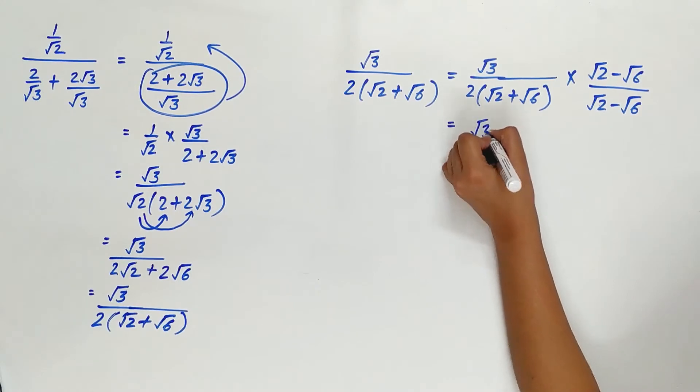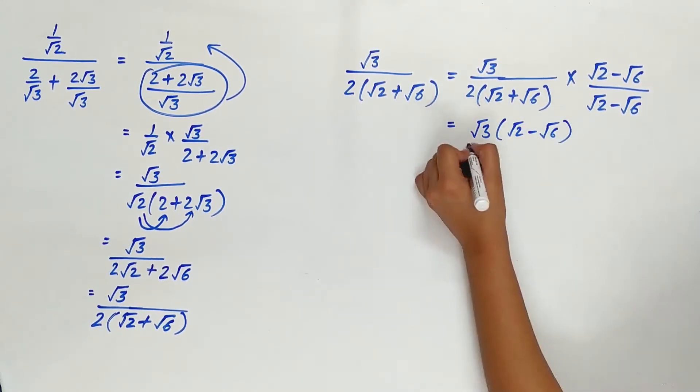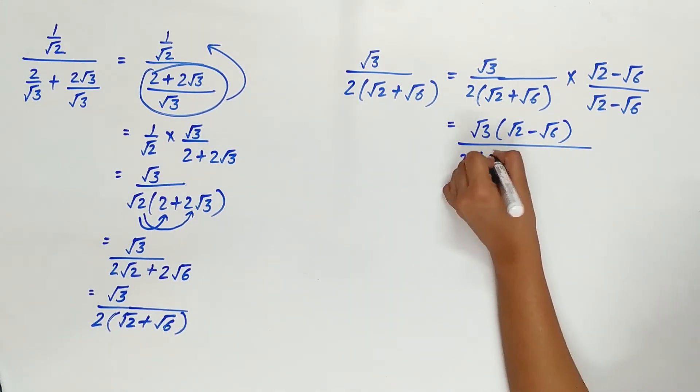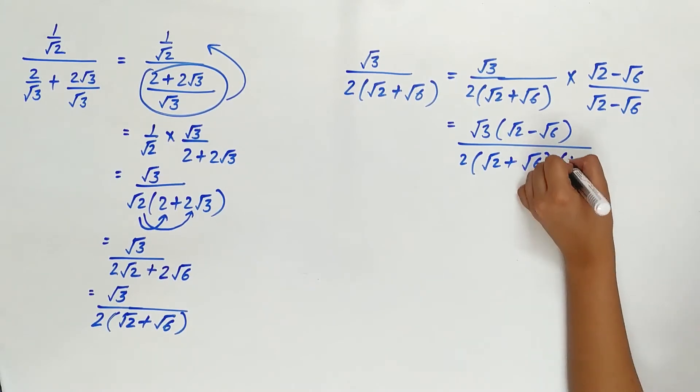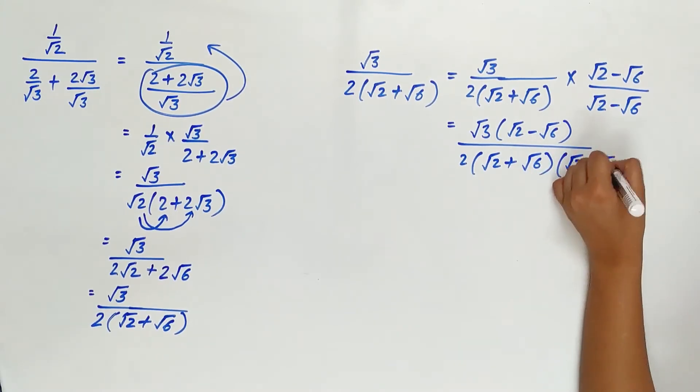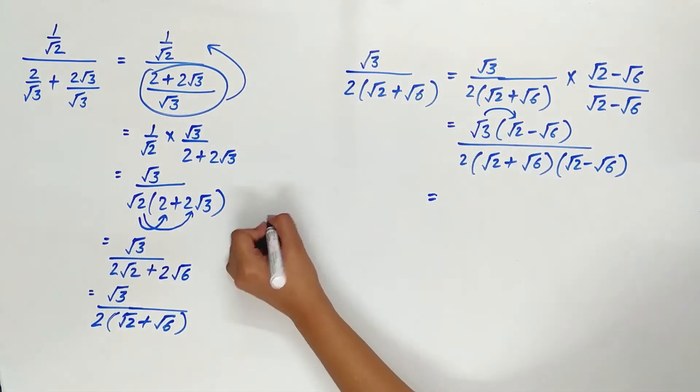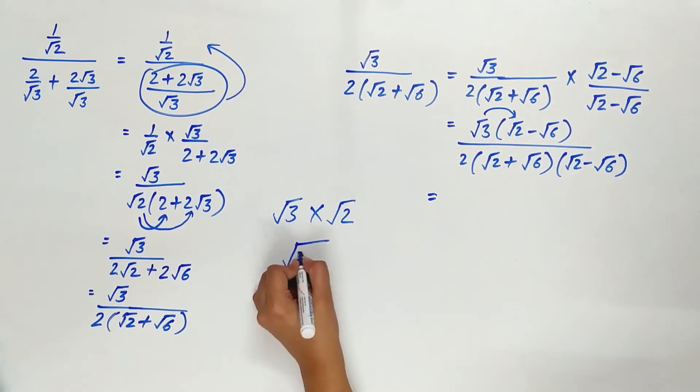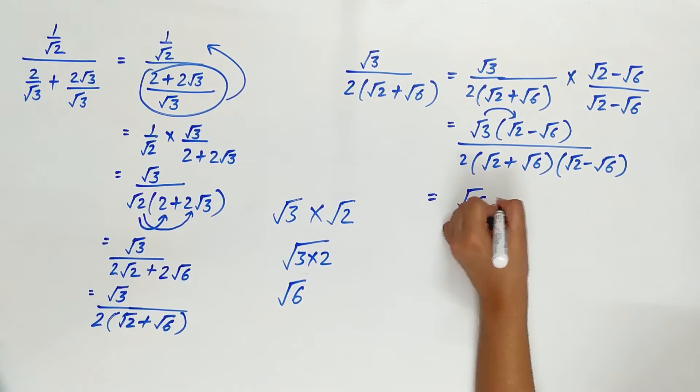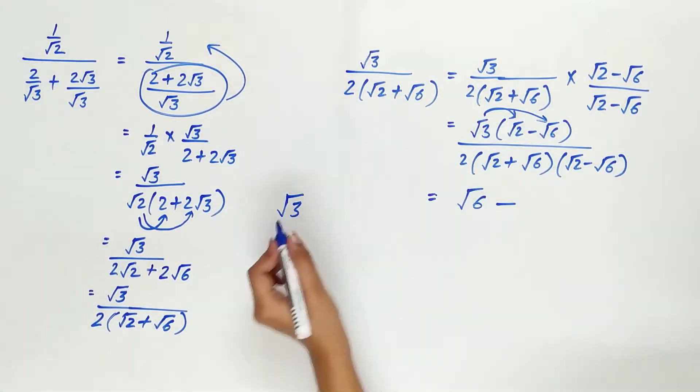Root 3 multiplied by root 2 minus root 6 divided by root 2 plus root 6 multiplied by root 2 minus root 6.